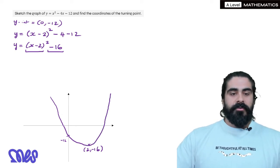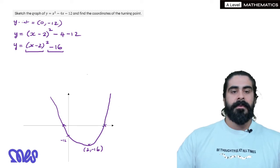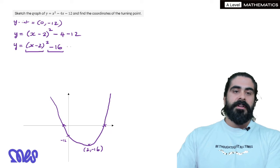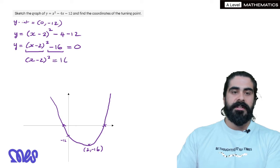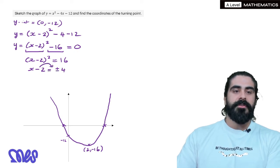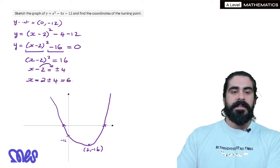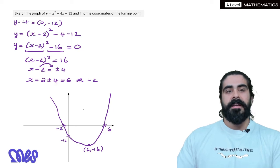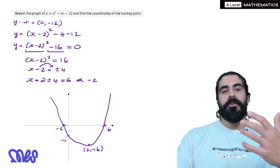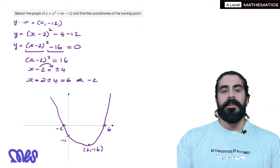Now we can work out where it crosses the x-axis by just making this equal 0. So if I make it equal 0, I can move the 16 over, I'd get x minus 2 squared equals 16. I can square root both sides, I'd get x minus 2 equals plus or minus 4, and then I move the 2 over, so x equals 2 plus or minus 4. 2 plus 4 is 6, or 2 minus 4 is minus 2. So we have 6 and minus 2 here. In this example, you could have just factorized, but I'm just showing how by completing the square, you answer everything in one go.